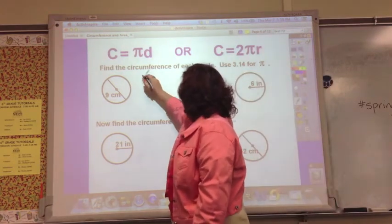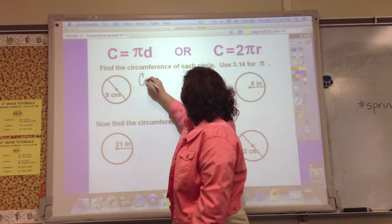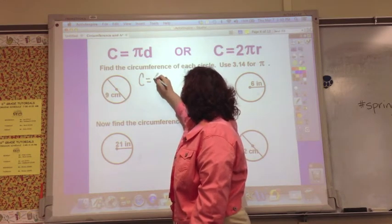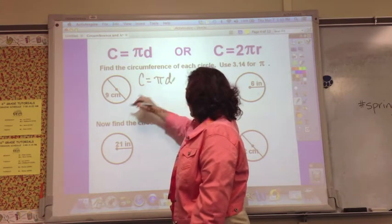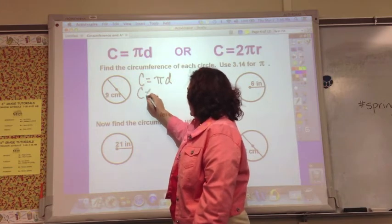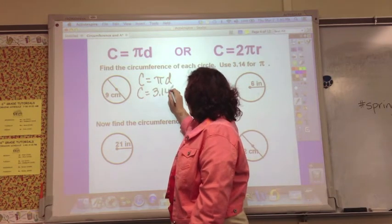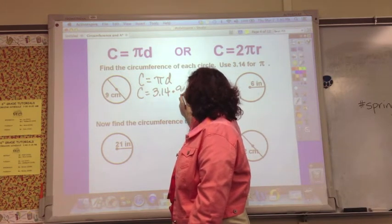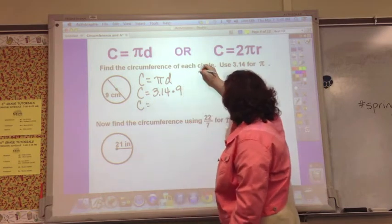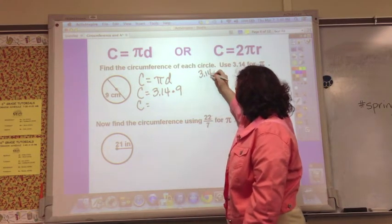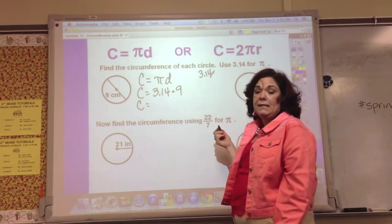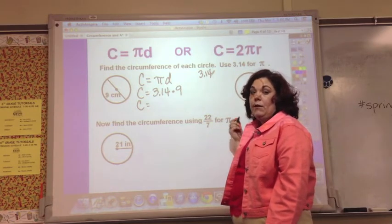Let me show you what this looks like. If you use 3.14 and it says find the circumference, we would say C equals pi d because we have the diameter. C equals 3.14 times 9. I have to put 3.14 on top because it has more digits even though it's a smaller number.